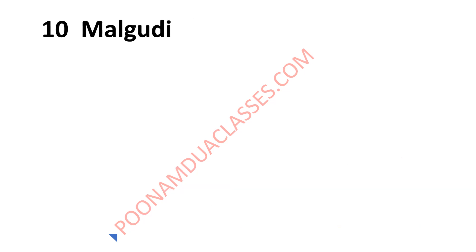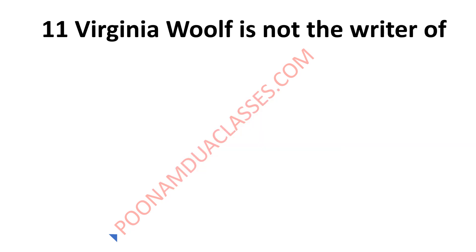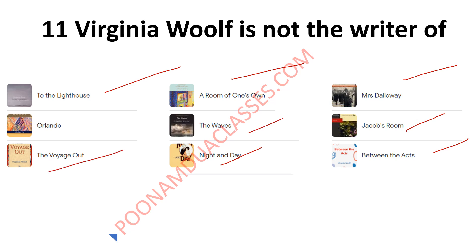There was a question about Malgudi — we know Malgudi is created by the famous writer R.K. Narayan. Another important question had a negative phrase asking which work Virginia Woolf did not write. Virginia Woolf's famous works include To the Lighthouse, A Room of One's Own, Mrs. Dalloway, Jacob's Room, Between the Acts, Night and Day, The Waves, The Voyage Out, and Orlando.